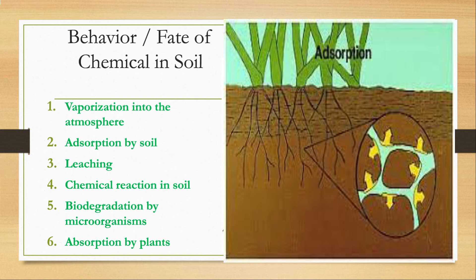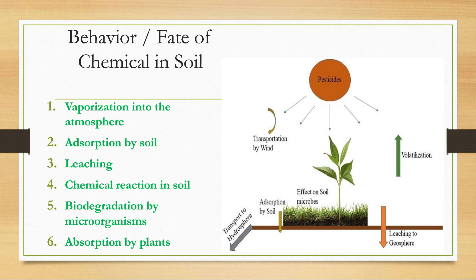In adsorption, pollutants adsorb onto soil particles; clay particles have higher adsorption capacity than sand. In leaching, pollutants leach down to groundwater and contaminate it, so water-soluble compounds should not be applied to wet soil or during monsoon. In chemical reaction, pollutants undergo chemical modification due to solar radiation and hydrolysis.